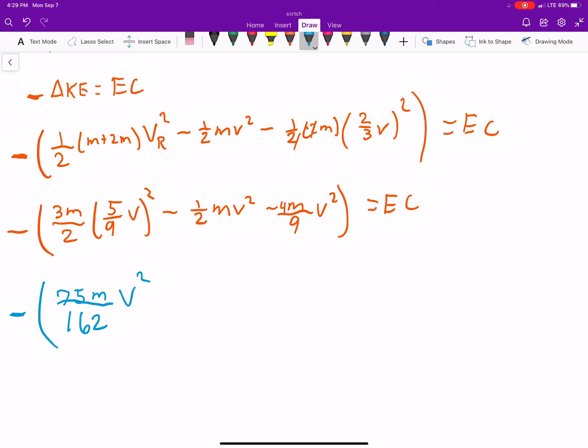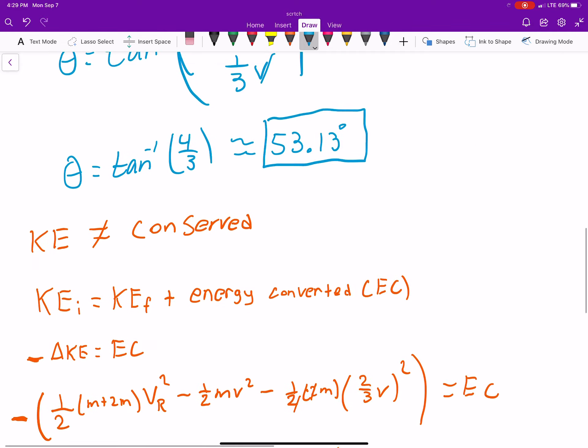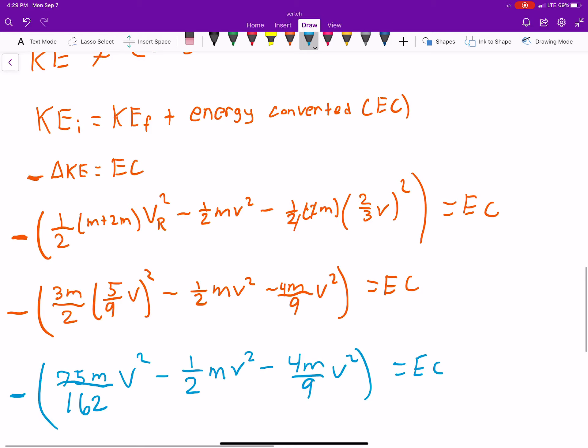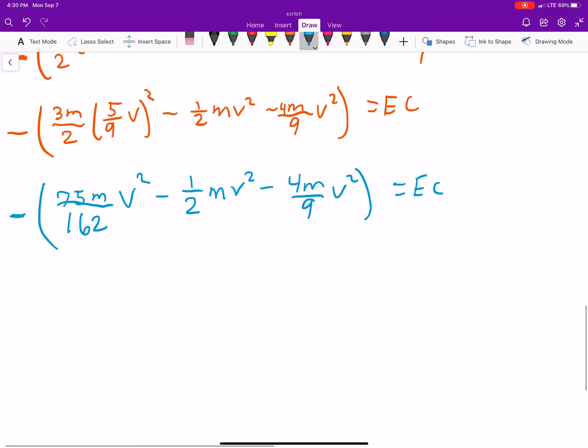So, 75mv squared over 162, minus, 1/2 mv squared, minus, 4m over 9 v squared, is equal to your energy converted. The resulting velocity was 5/9 v. So, that's going to be 25, and 25 times the 3. Yeah, I think that's right.